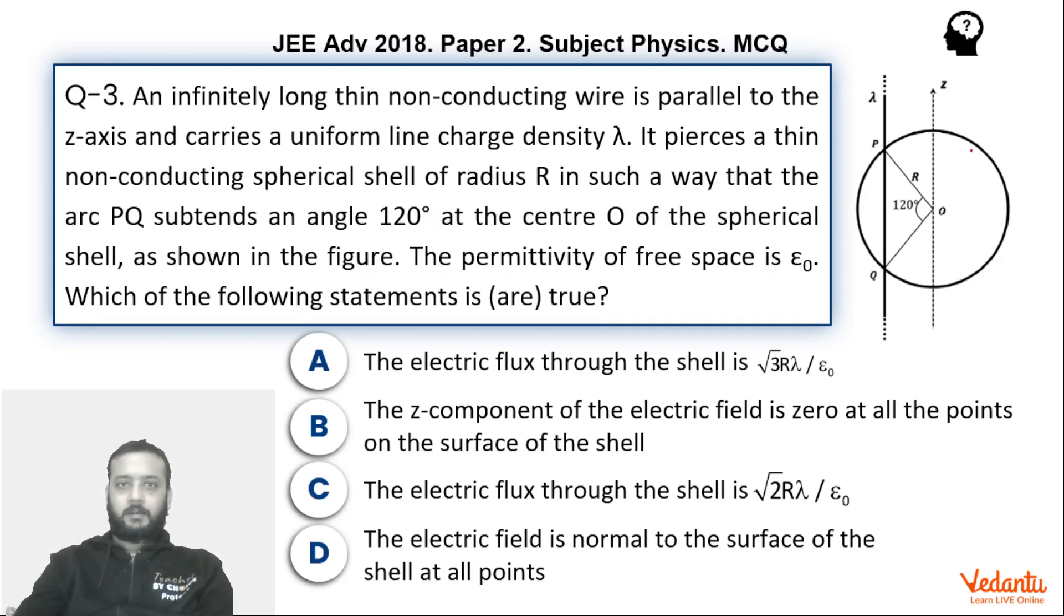In this case there is a non-conducting wire which is infinitely long and the charge density on the wire is lambda, a linear charge density. A section of this wire is being pierced by a sphere of radius r. So basically this part of the wire is lying inside the sphere of radius r, and this part of the wire subtends an angle of 120 degrees at the center. Permittivity of the free space is epsilon naught.